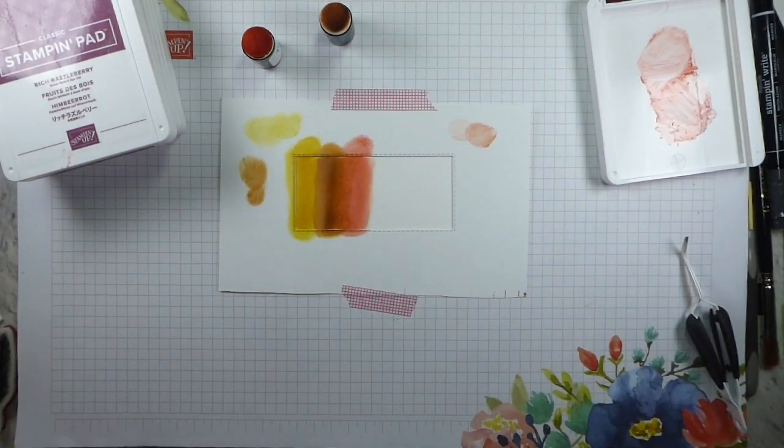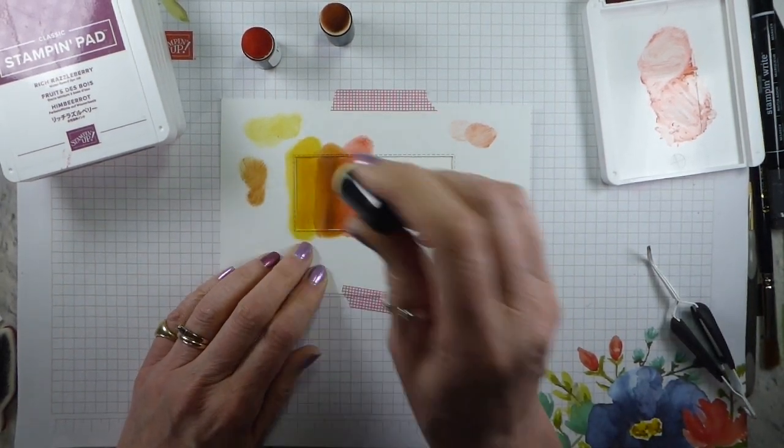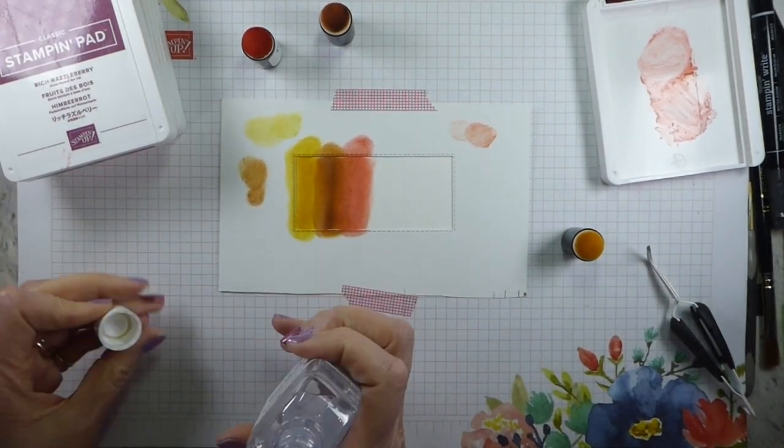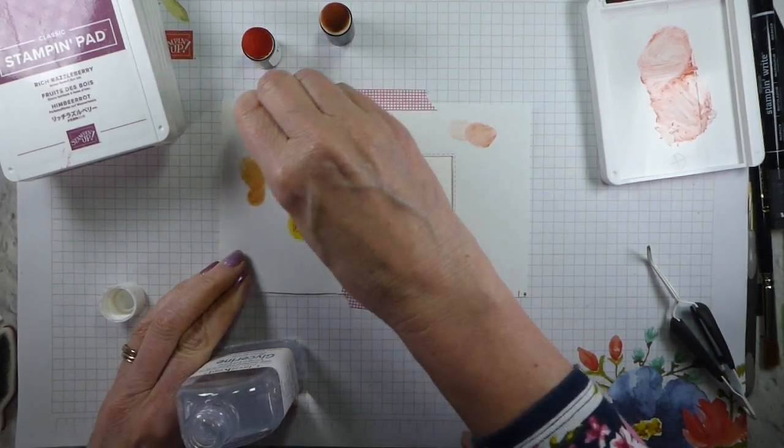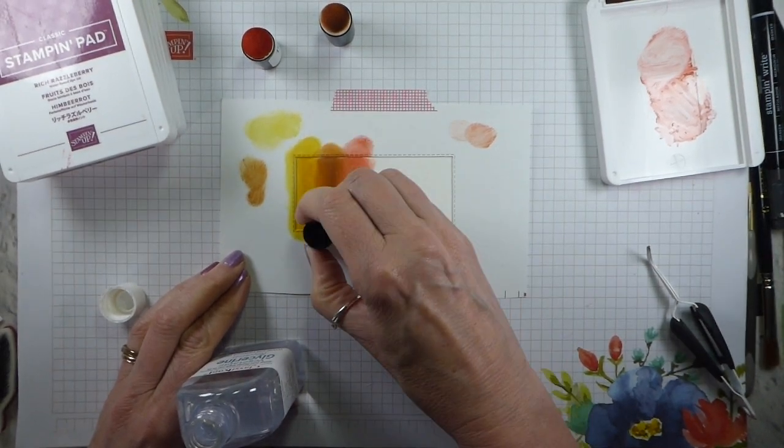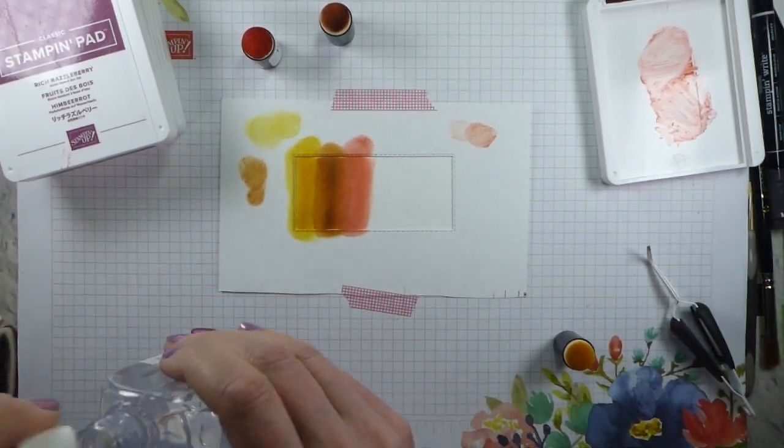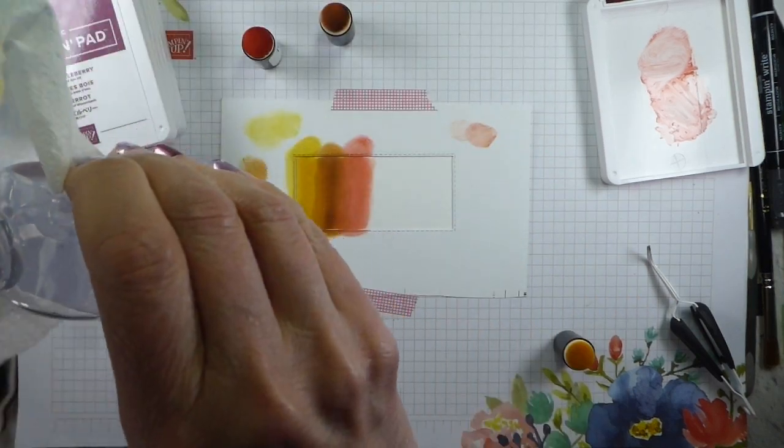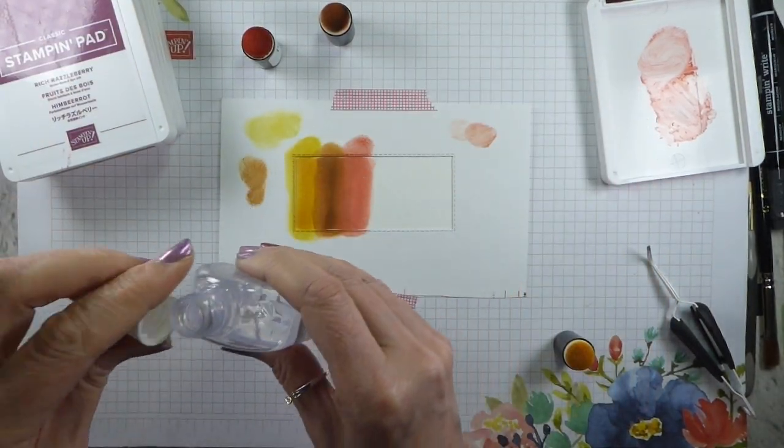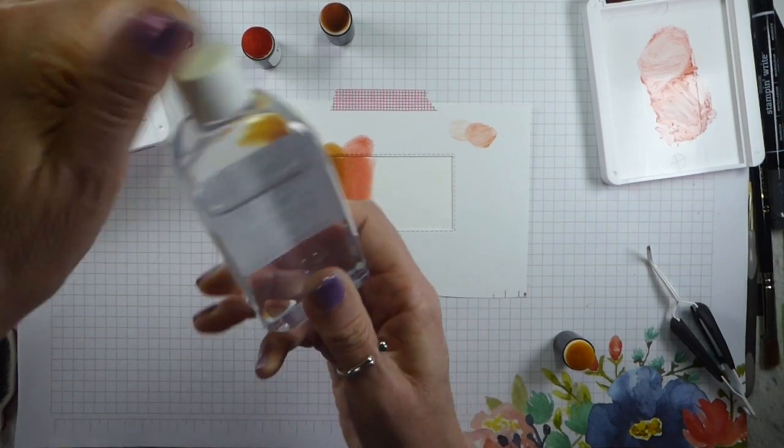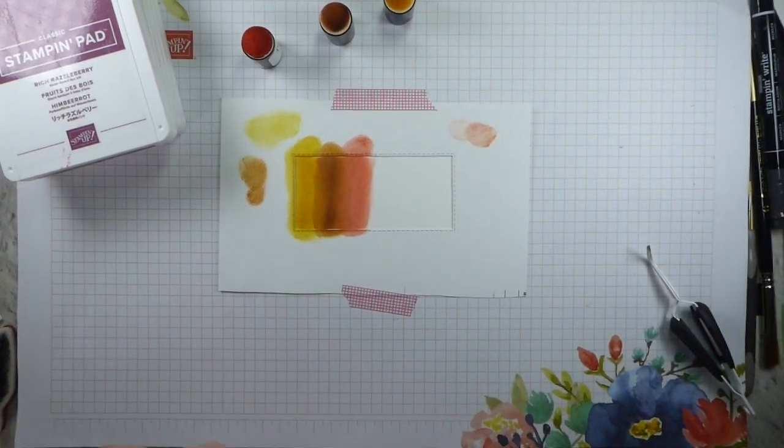I don't know quite how it actually works that way, but it does. So Terracotta Tile. The other thing you can do, of course, is pick up from the lid. Someone did ask me whether I used different sponge daubers for with and without glycerin. No, I don't. I'm going to bring back in my Cinnamon Cider and just add a bit more of that.